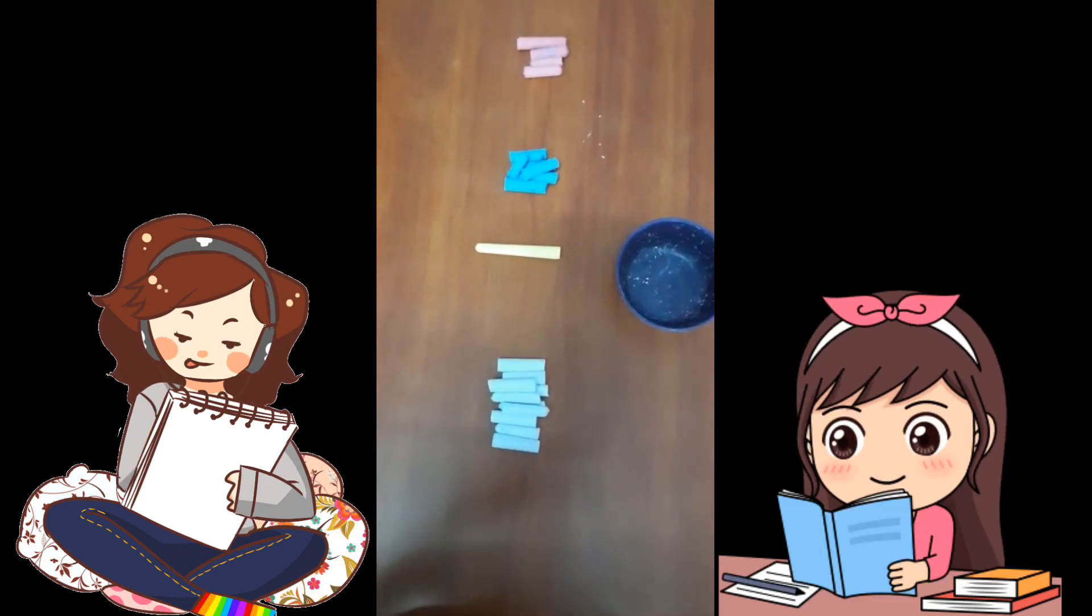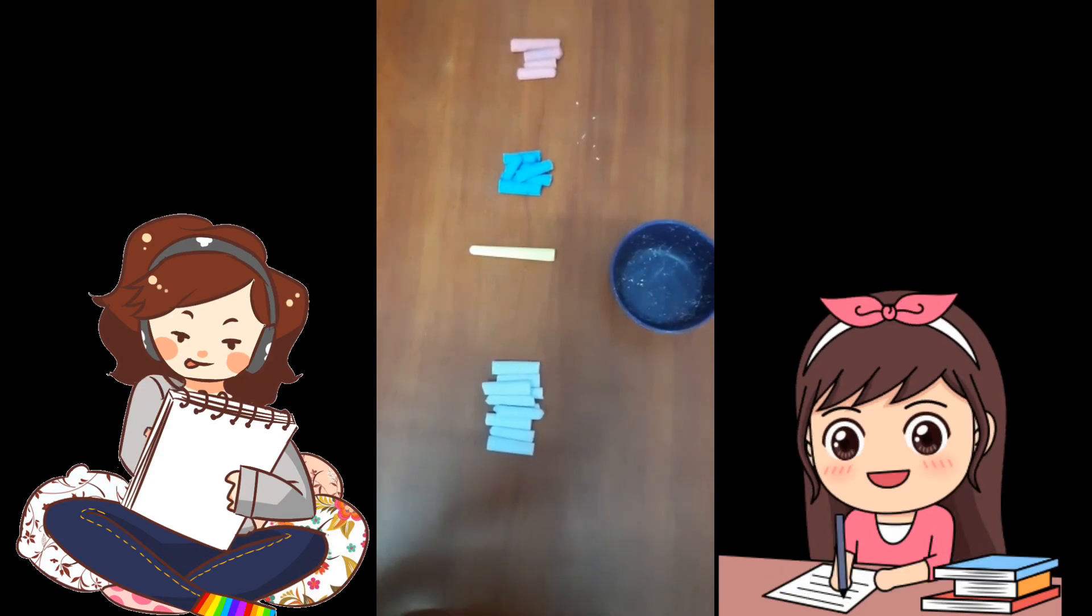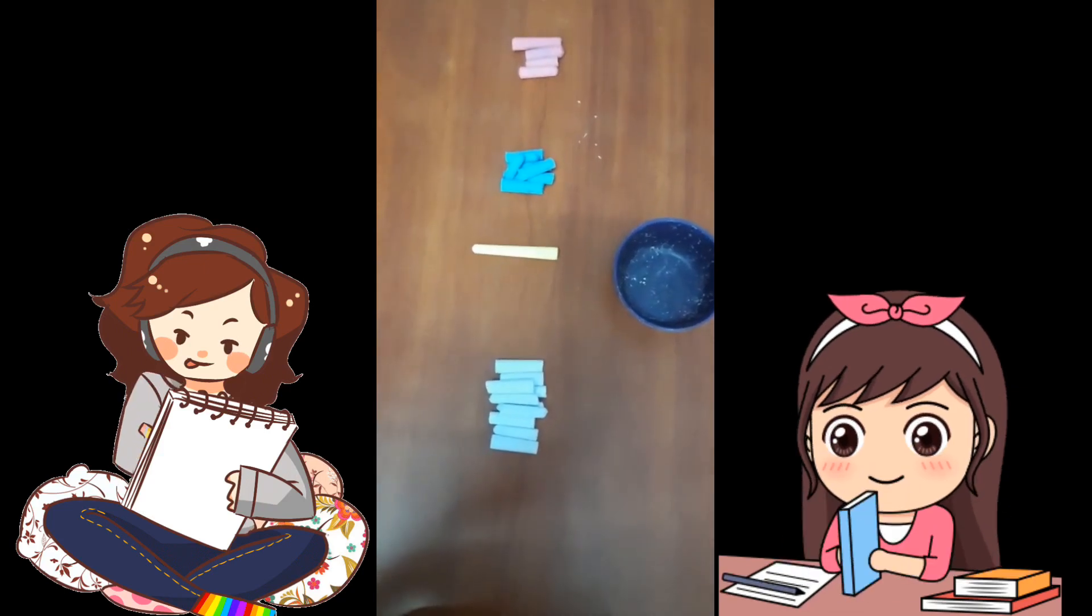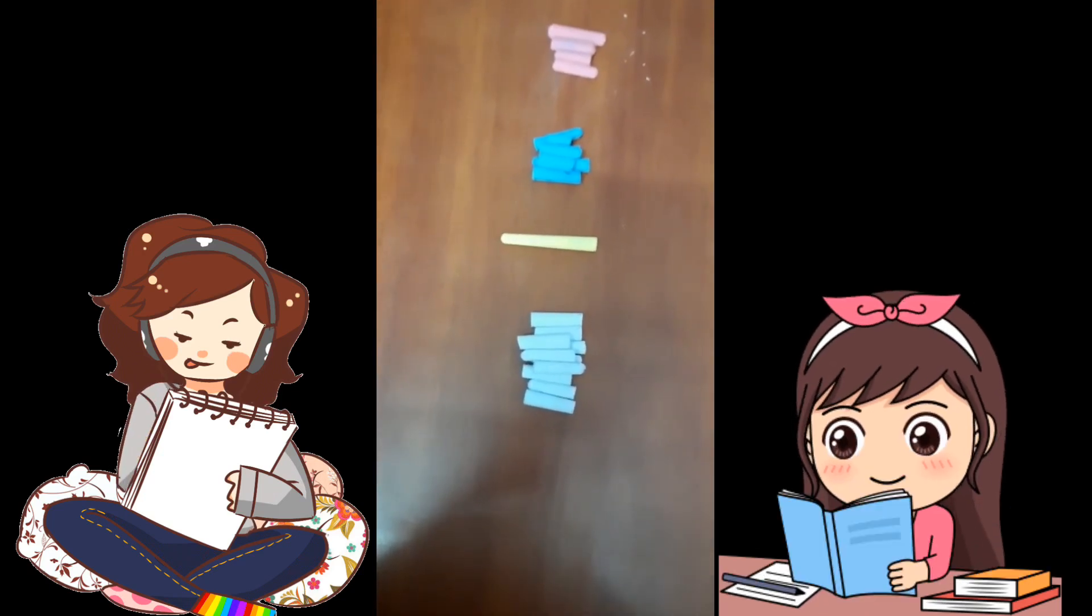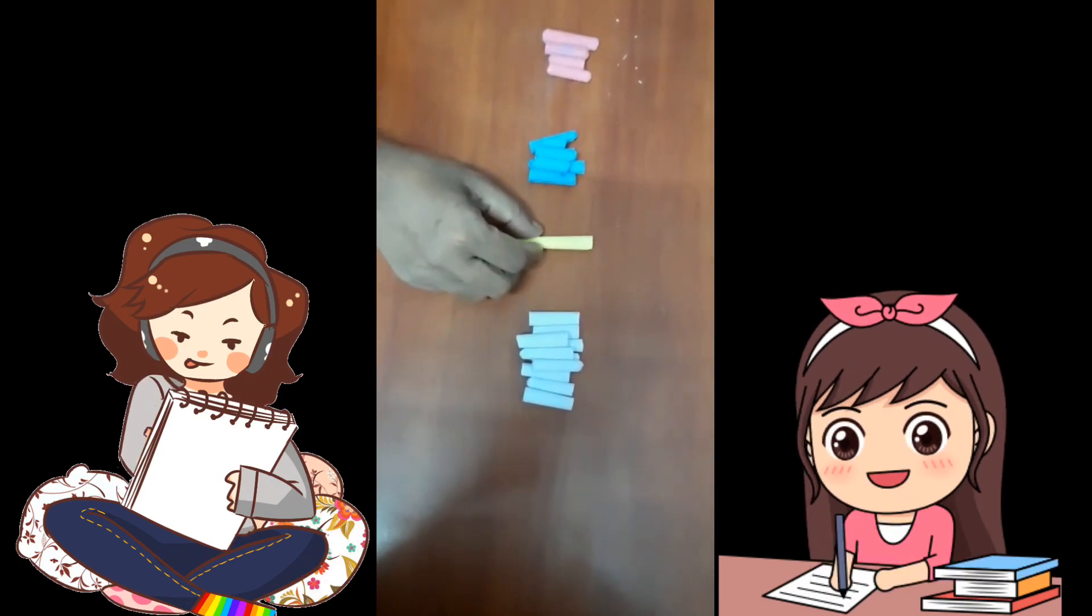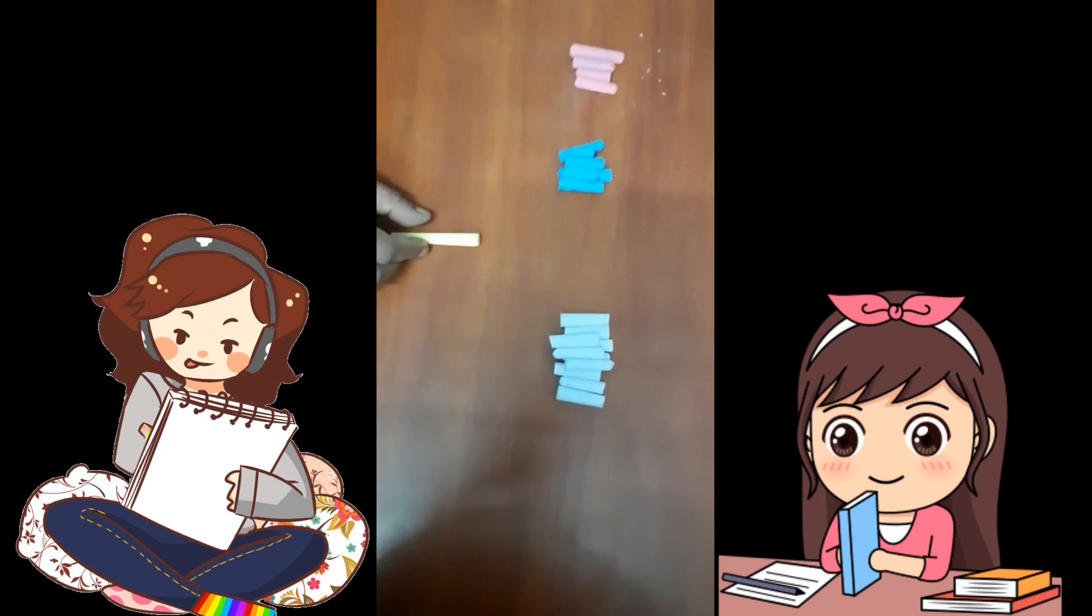Okay children, now let's count them one by one. First I will count yellow chalks. Now we will count yellow chalk. So there is only one yellow chalk.